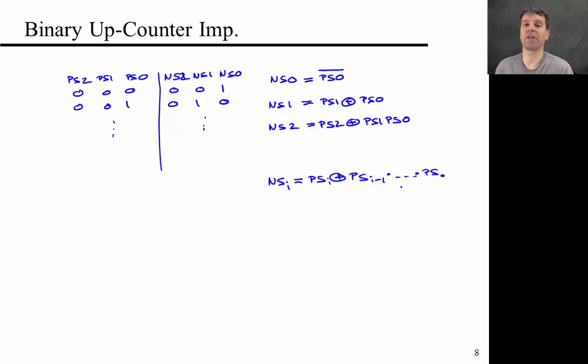You can convince yourself, at least for the 3-bit counter, that this is true by solving the K-maps. You can also just look at the state diagram that I've drawn on the previous slide. You can actually convince yourself it's very easy to see that next state 0 equals not present state 0.